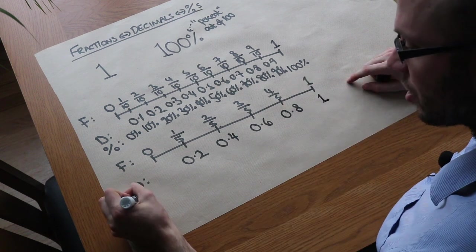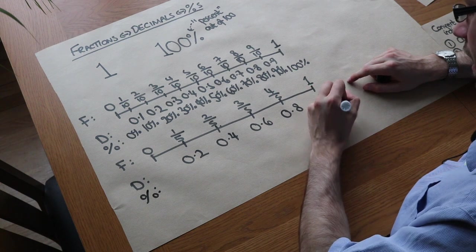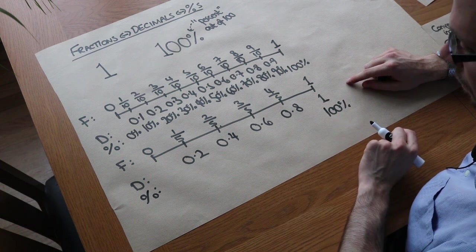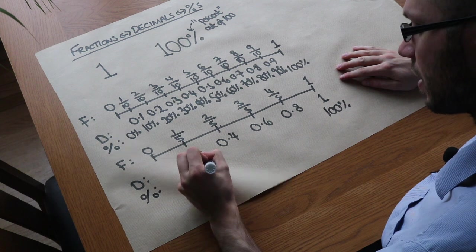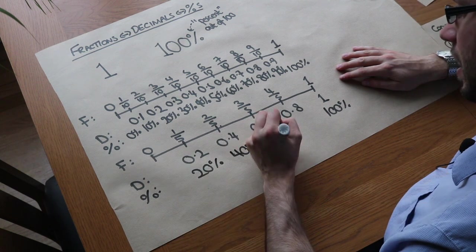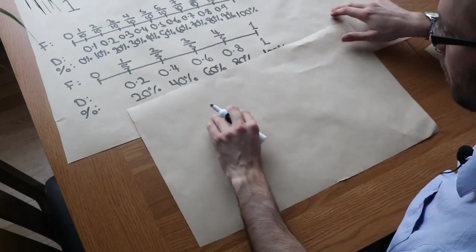What about as a percentage? Well, if we split 100% into 5 bits, then each bit is 100 divided by 5, which is 20%. So we've got 20%, 40%, 60%, 80%, and then 100%.